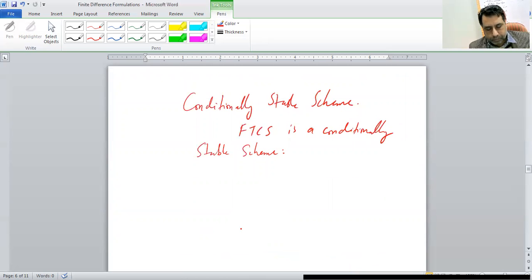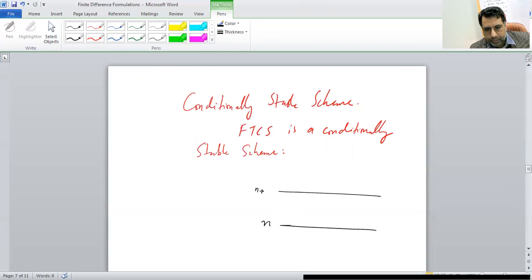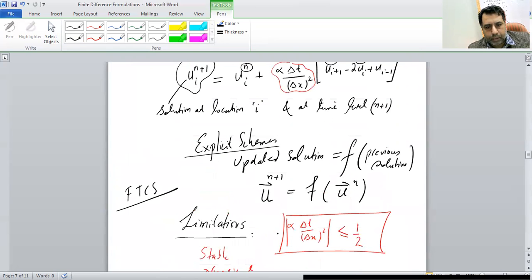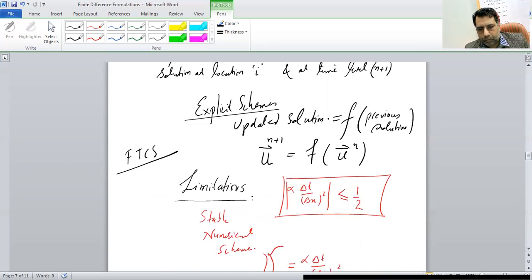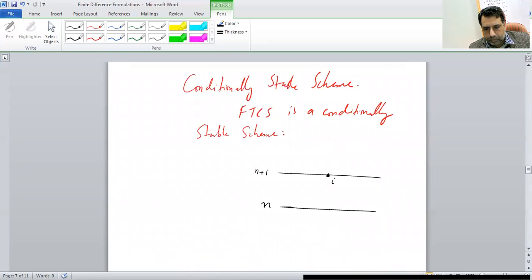Let us move towards the computational stencil of this scheme. This is time level n, this is time level n plus one. We are interested in the computation of solution at this node i at time level n plus one. If you look at this formula, the solution at time level n plus one at this node can be computed by feeding all this information. This information is coming from the previous time level and from three grid points: the location i, location i minus one and location i plus one. So here is the location i, this is i plus one and this is i minus one.